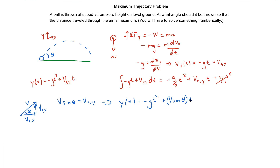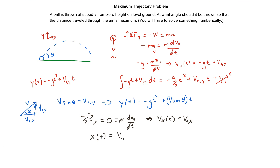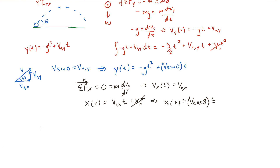I vaguely remember from multivariable calculus that you have to solve some sort of line integral. I'm thinking we have to create some parameterization, get the line integral set up, take the derivative of it, and that should give us the maximum distance. x(t) = v·cos(θ)·t, since the initial x position is zero. So now we have our position vector defined by time. But how do we create this line integral? I know we have to create some parameterization.